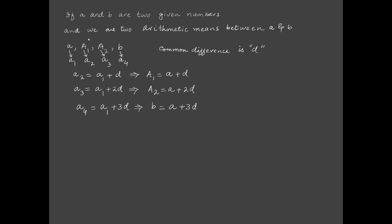If a and b are two numbers given and we are asked to find two arithmetic means between a and b, we will insert two arithmetic means A1 and A2 between a and b. This is an arithmetic sequence of four terms: the first term is a, the second term is A1, the third term is A2, the fourth term is b.